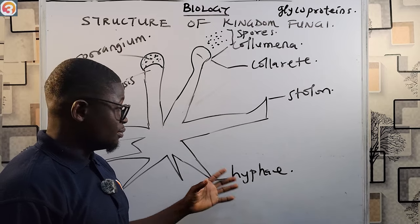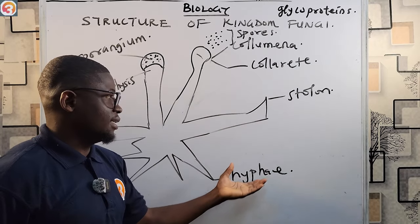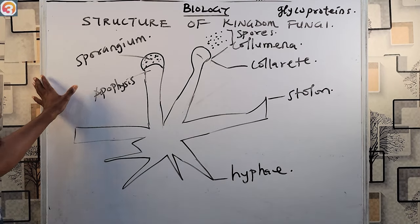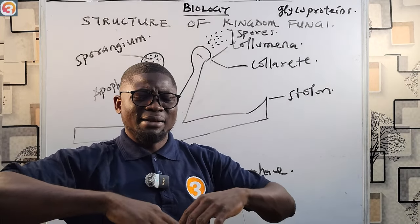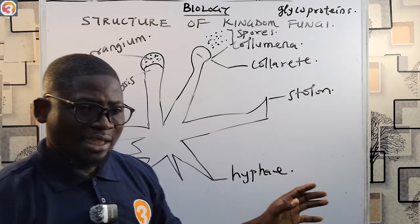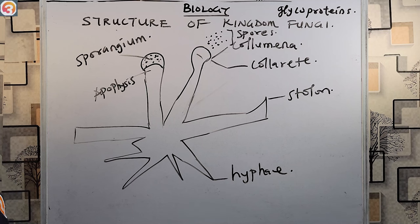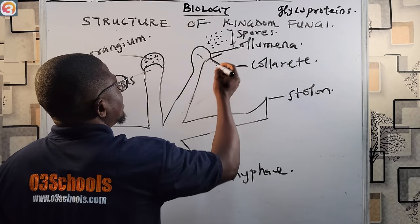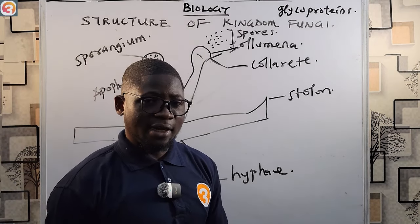You need to know this structure. Know the sketch on your head and know the positions of each part. The stolon, the hyphae, the columella, and the apophysis all appear in past examination questions. Rhizopus is an example of fungi and it has a branching mycelium containing all these component parts.